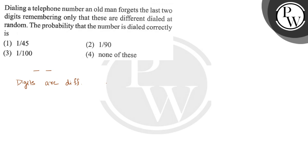Now what probability do we need to find? That the number dialed is correct. So the correct combination - there is only one correct combination, and this is our favorable outcome.